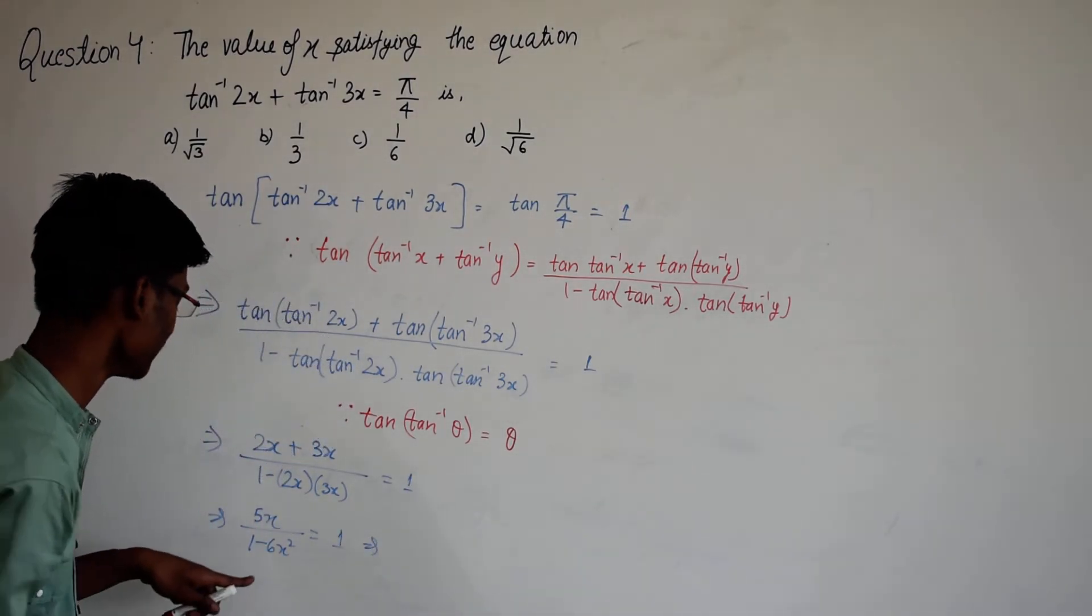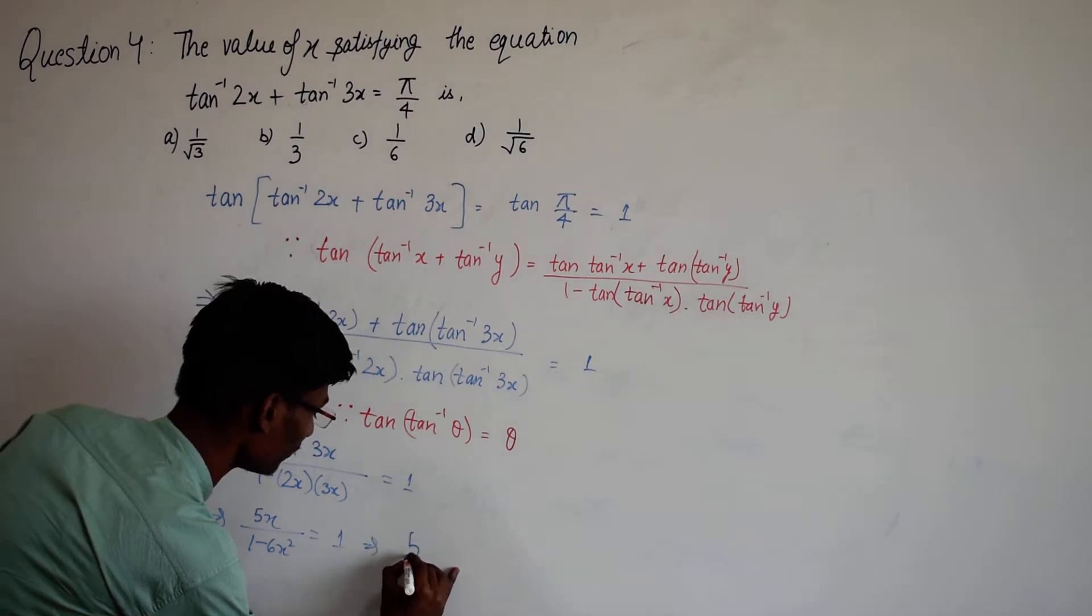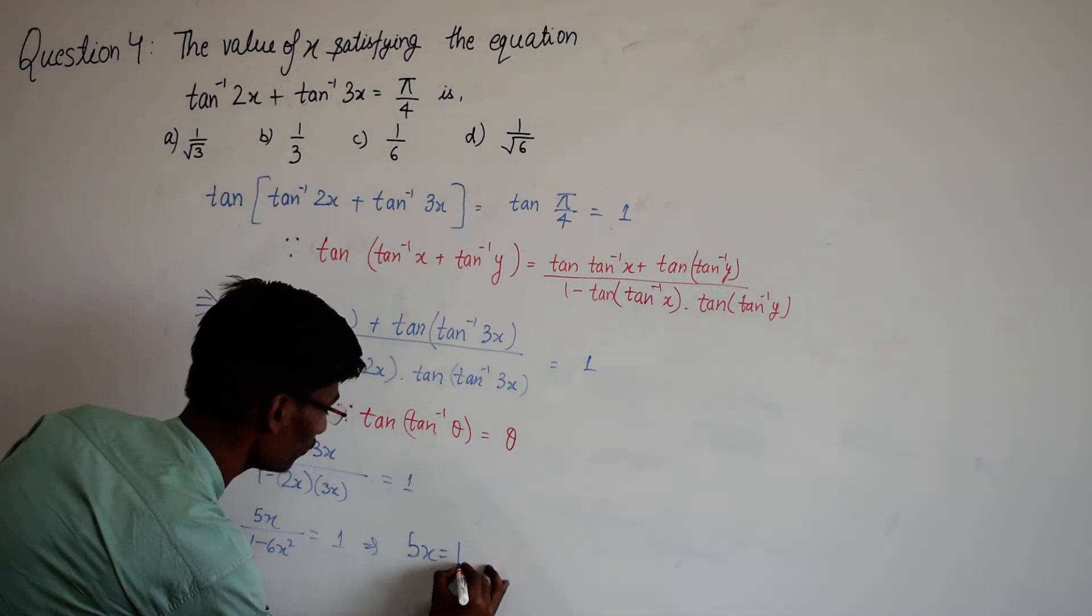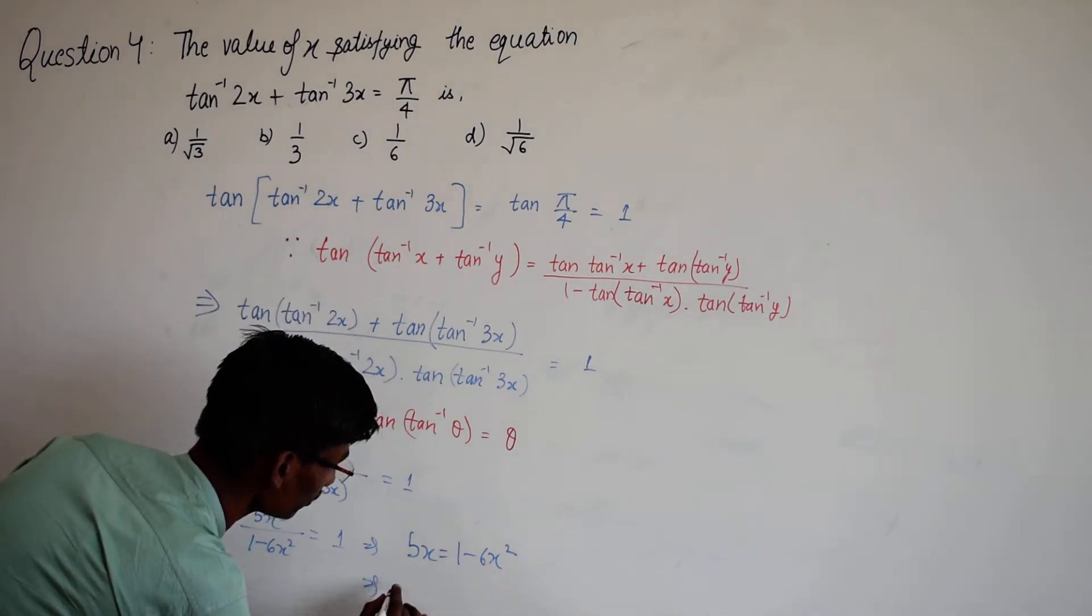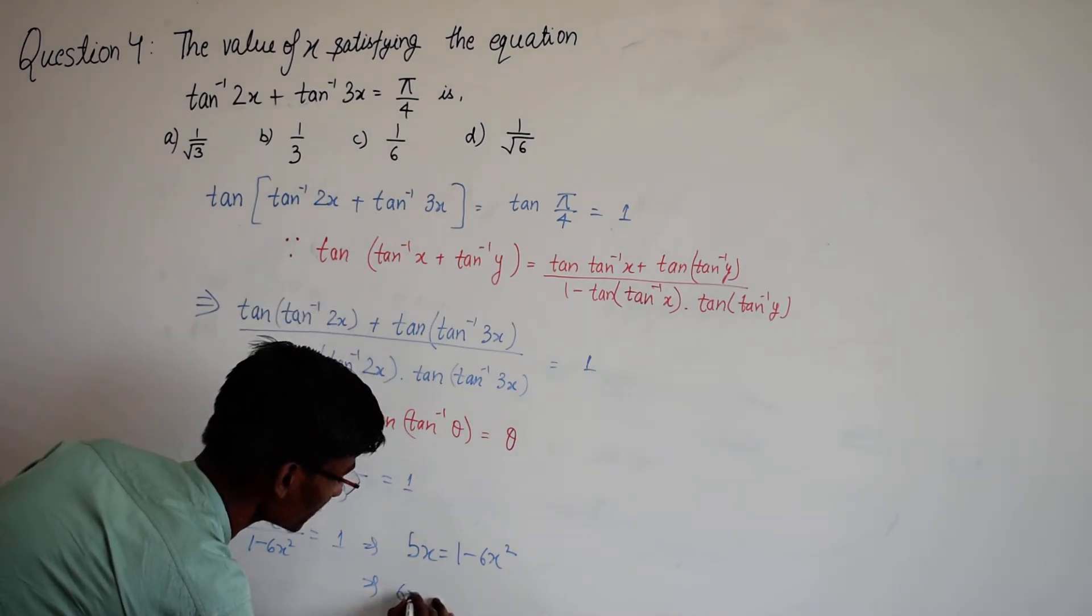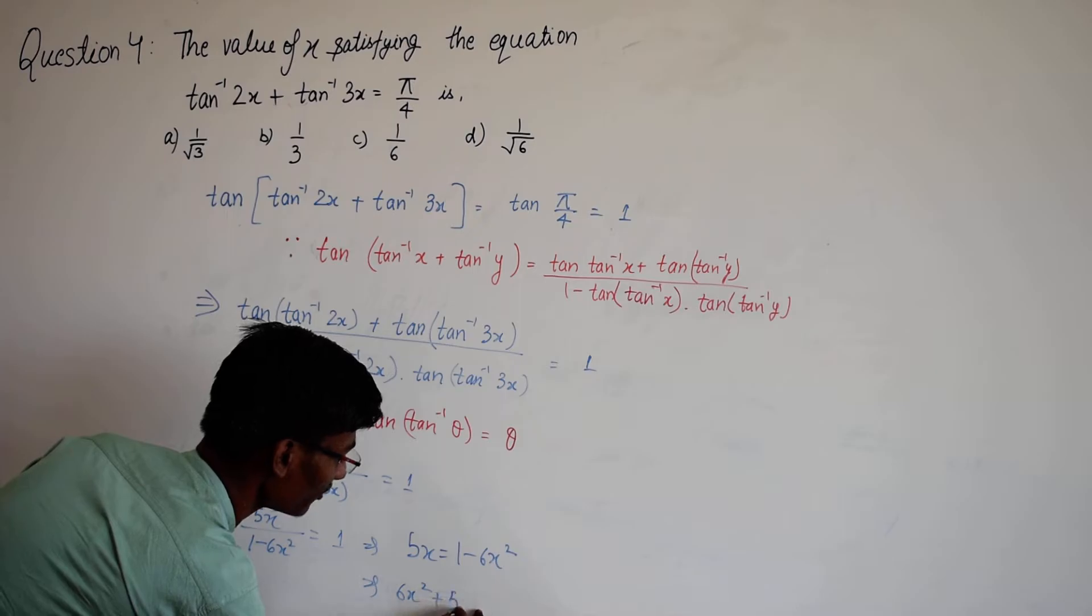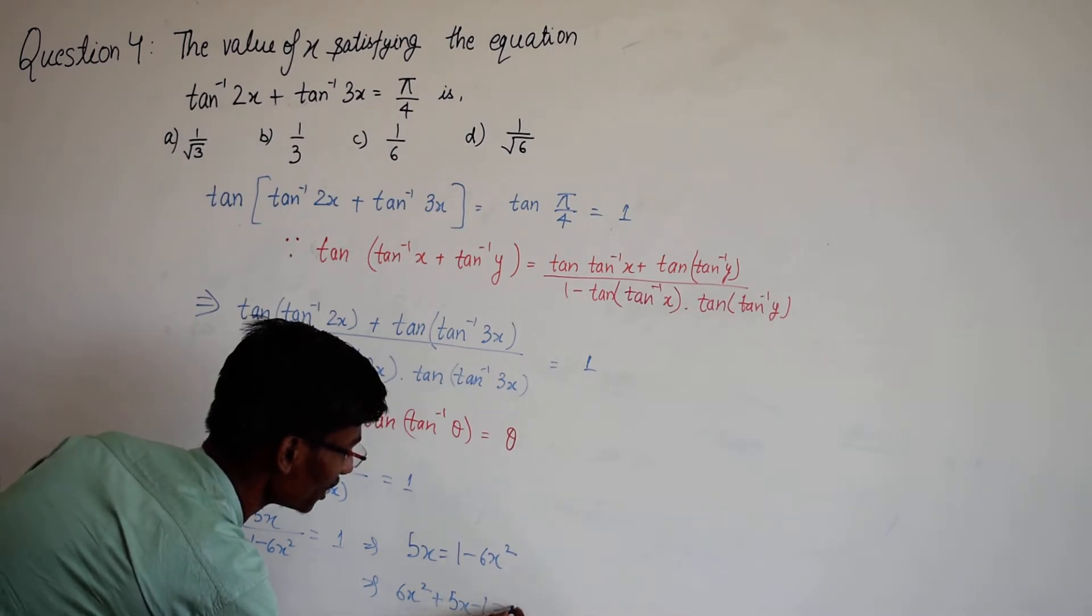So it will become a quadratic equation which is 6x square plus 5x minus 1 equal to 0.